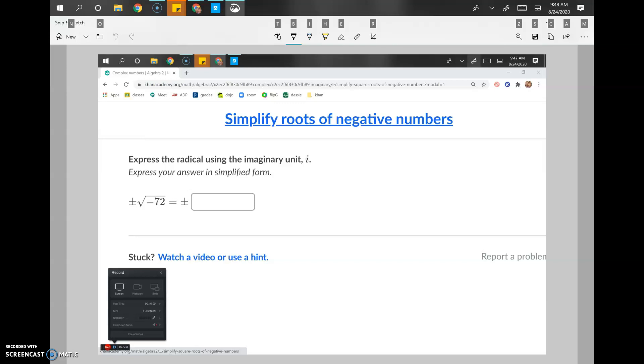So let's get into it. Number one: express the radical using the imaginary unit i. Express your answer in simplified form. So we've got this new thing i. i stands for imaginary number, and if you remember, imaginary numbers are not real numbers.